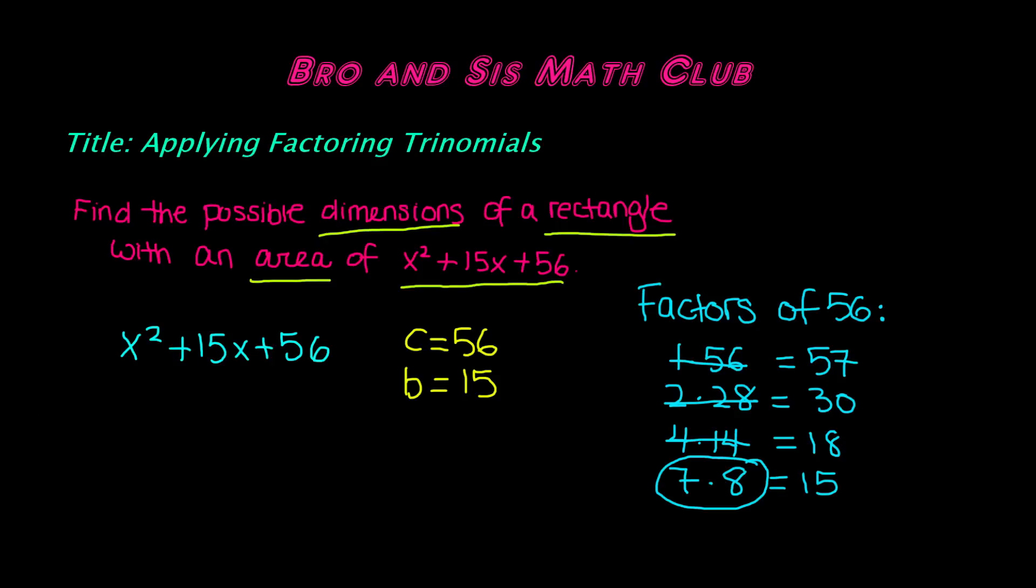So when you're writing out the binomials, remember, when you factor it out, you're going to get two binomials. So it's going to be x plus or minus a number, and then x plus or minus a number. So in this case, our b term and c term is positive, so that means both of these are going to be positive.